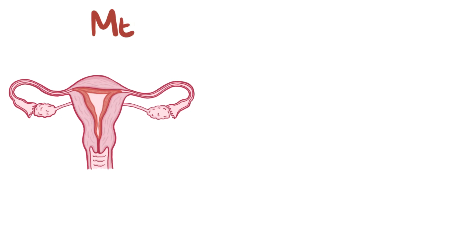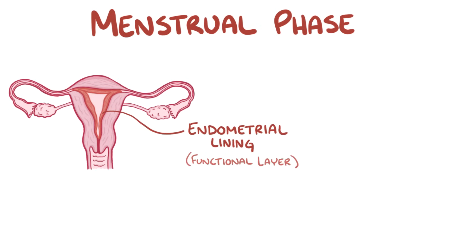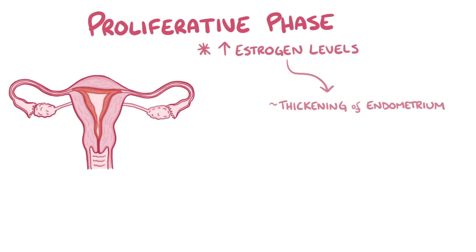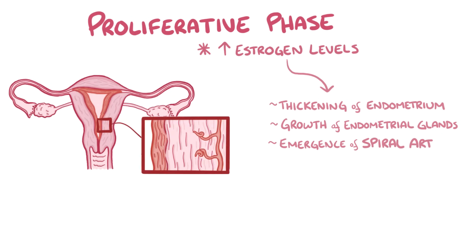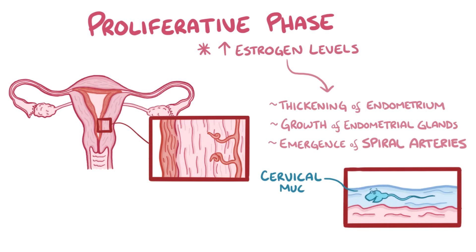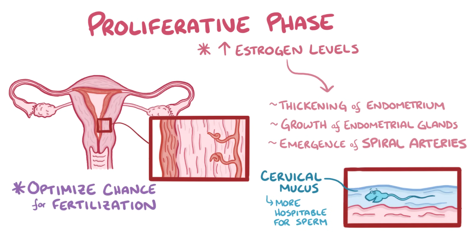While the ovary is busy preparing an egg for ovulation, the uterus is preparing the endometrium for implantation and maintenance of pregnancy. This process begins with the menstrual phase, when the old functional endometrial lining from the previous cycle is shed through the vagina, producing the bleeding known as the menstrual period. The menstrual phase lasts an average of 5 days and is followed by the proliferative phase, during which high estrogen levels stimulate thickening of the endometrium, growth of endometrial glands, emergence of spiral arteries, and changes in cervical mucus that make it more hospitable to sperm. The chance of fertilization is highest between days 11 and 15 of an average 28-day cycle.